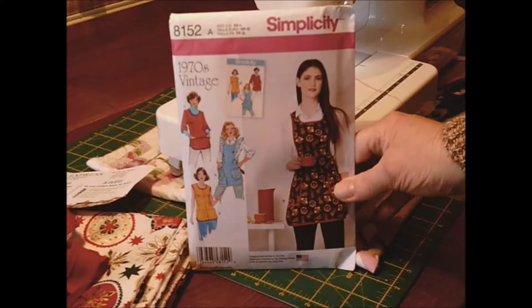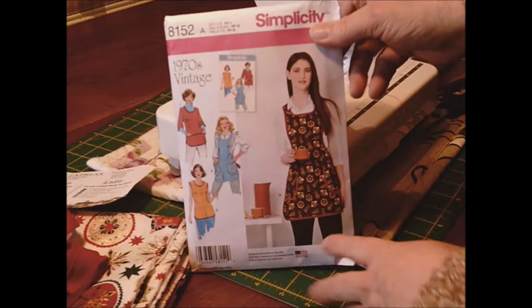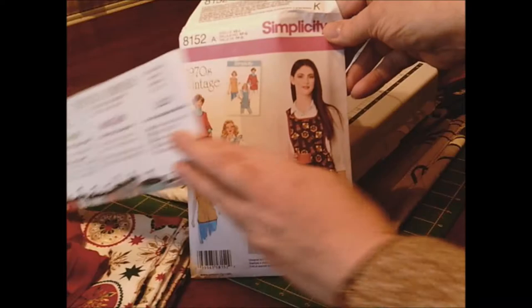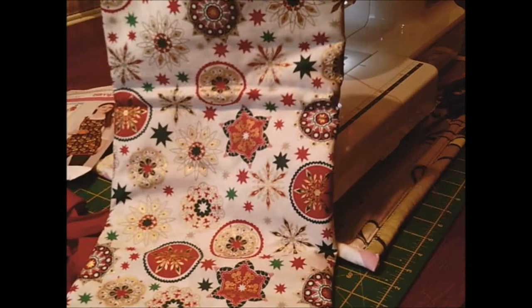So as promised, this is Simplicity pattern 8152, a 1970s vintage apron. I'll be doing this one here. This is where I got the textile from, same as before from Textile Express. It's absolutely gorgeous and it's called Kaleidoscope.